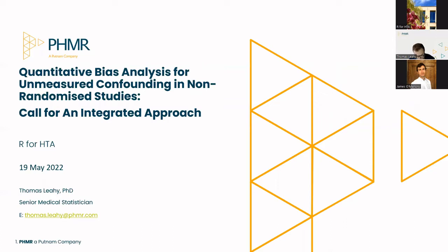Today I'm going to be talking to you about quantitative bias analysis for unmeasured confounding in non-randomised studies. I'm going to demonstrate this through an implementation in R through a fictitious case study.